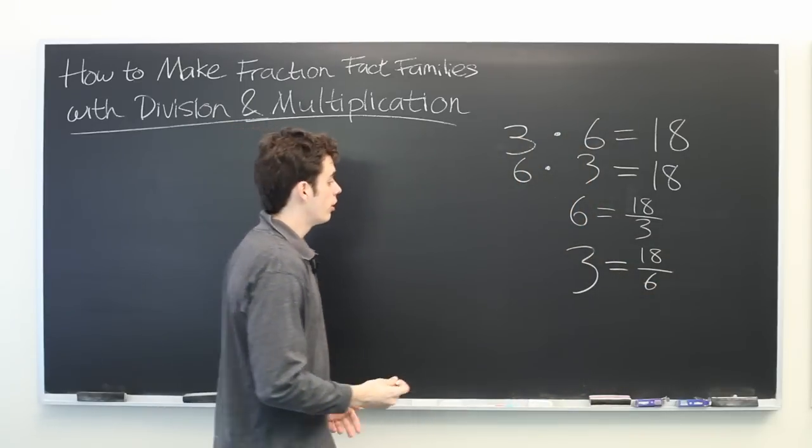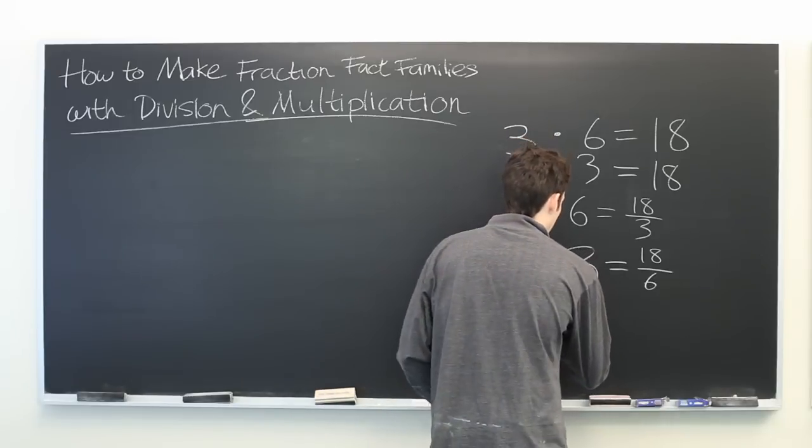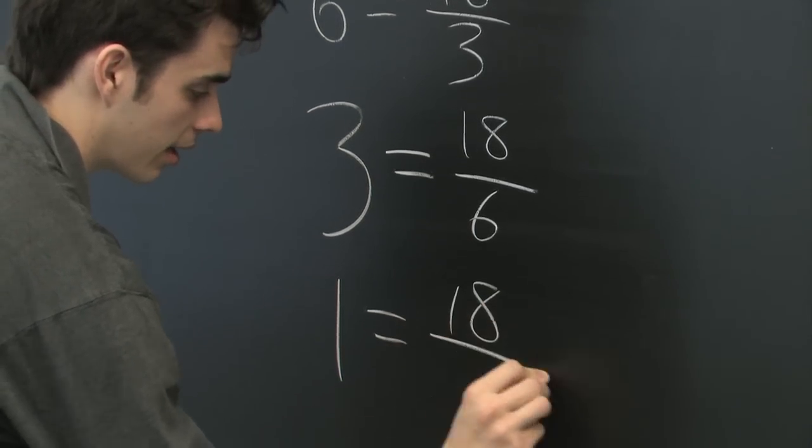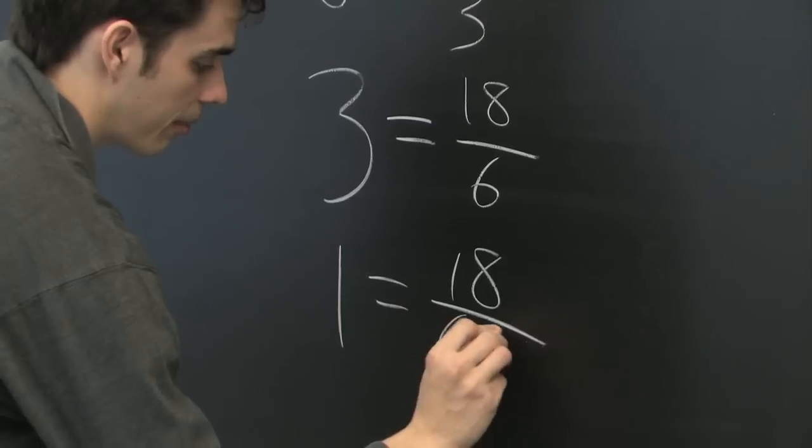And if you want to take it a step further, you could also show 1 is equal to 18 divided by 6 times 3.